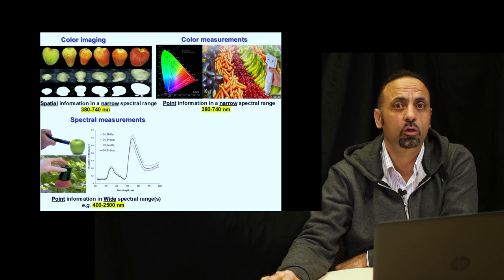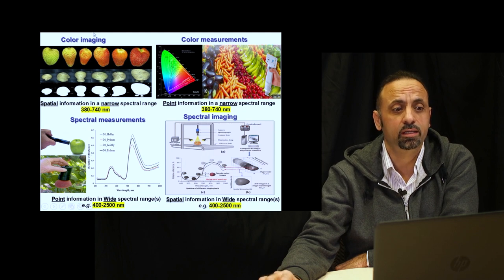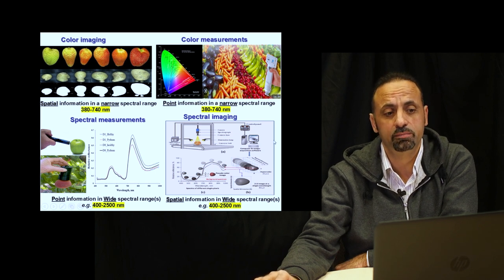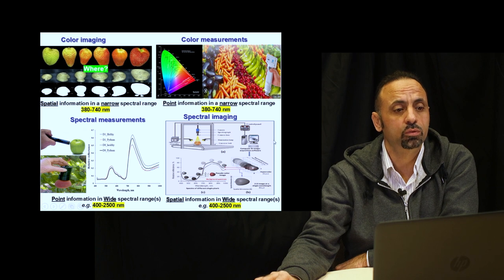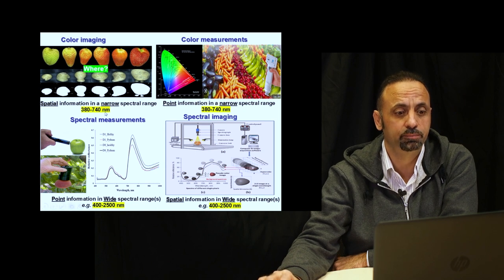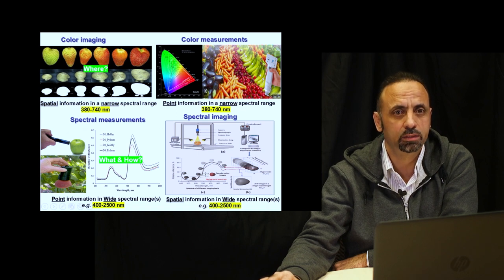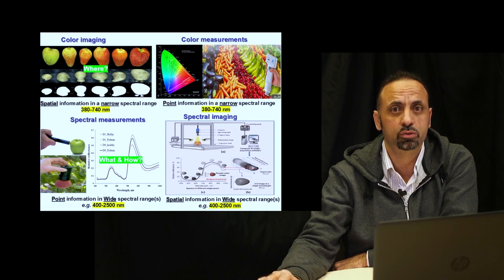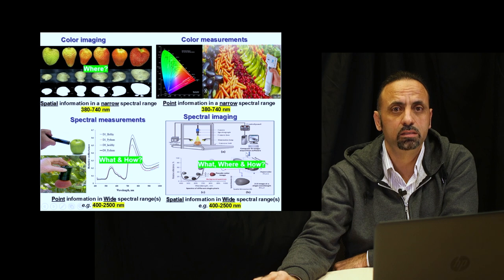A lot of information can be obtained from spectral data. But if you are interested in carrying both spatial information and spectral information simultaneously, you need to go for spectral imaging. If you want to know where — you are interested in spatial information. If you want to know what is inside the sample and how much — you use a spectrometer or near infrared spectroscopy. But if you want to answer all three questions — where, what, and how much — you need to use a spectral imaging system.